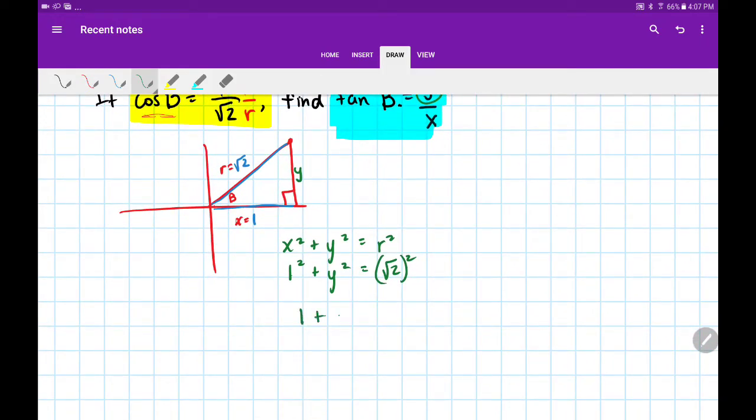So that's 1 + y² = 2. Subtracting 1 on each side, I get y² = 1. And in my last step, y = 1.